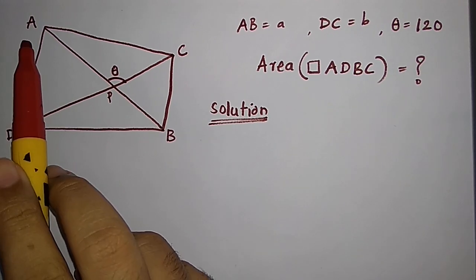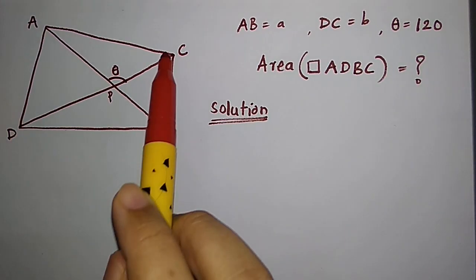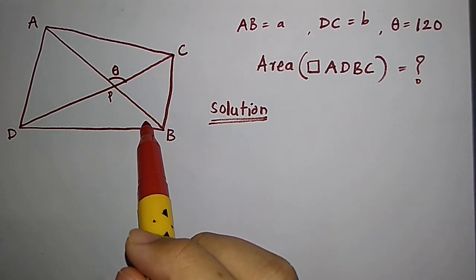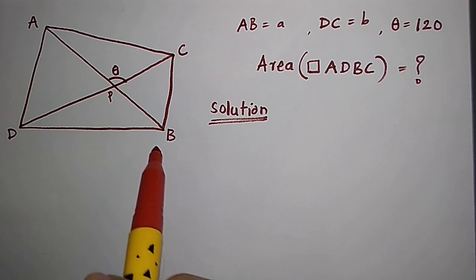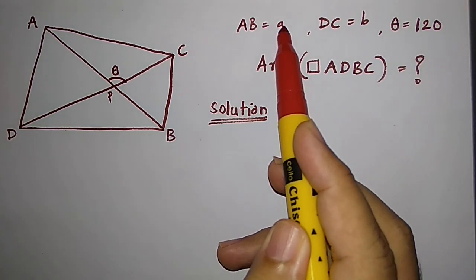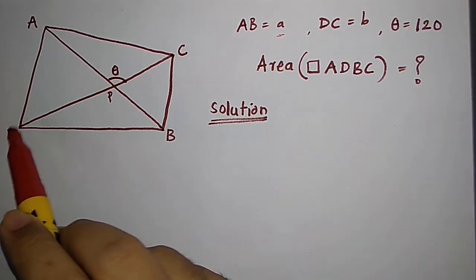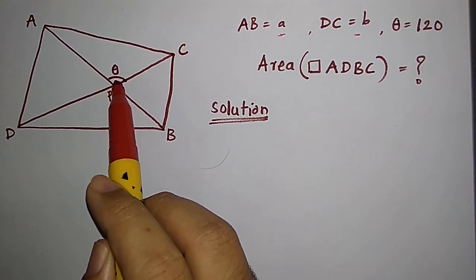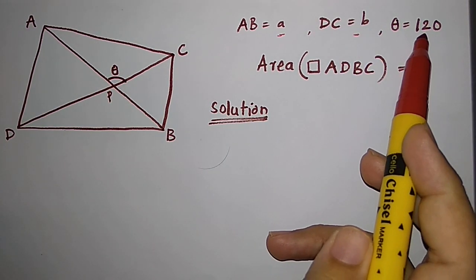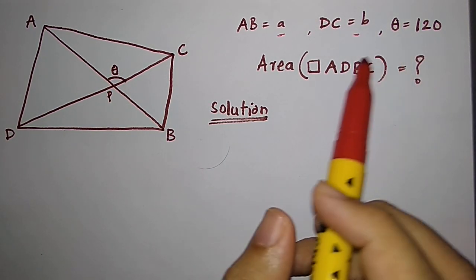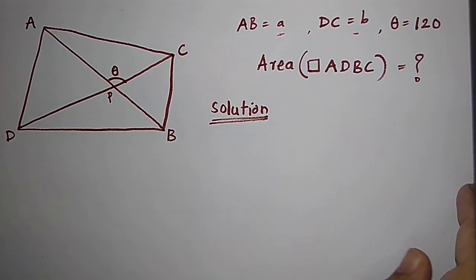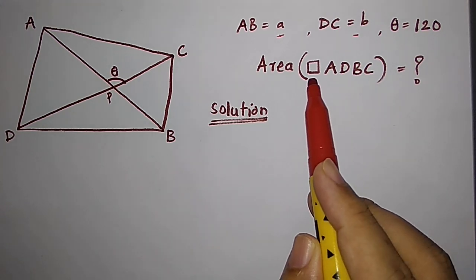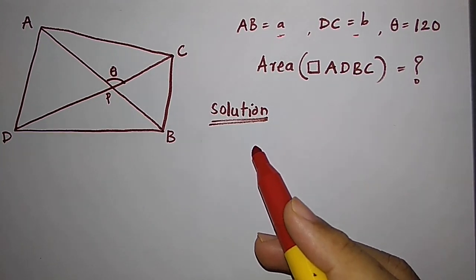We have given a quadrilateral ADBC. We have also given the diagonals of this quadrilateral, where the length of AB is A and the length of DC is B. We have also given the angle between them, which is theta and it is equal to 120. We are asked to find the area of this quadrilateral.